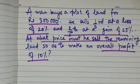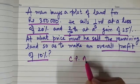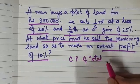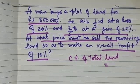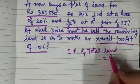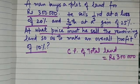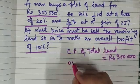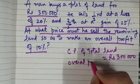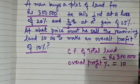Let us see how to solve this question. What is the CP of total land? First we are going to write down CP of total land. CP of total land is rupees 3 lakhs. Now what is the overall profit which he needs to make? Overall profit percent is 10.